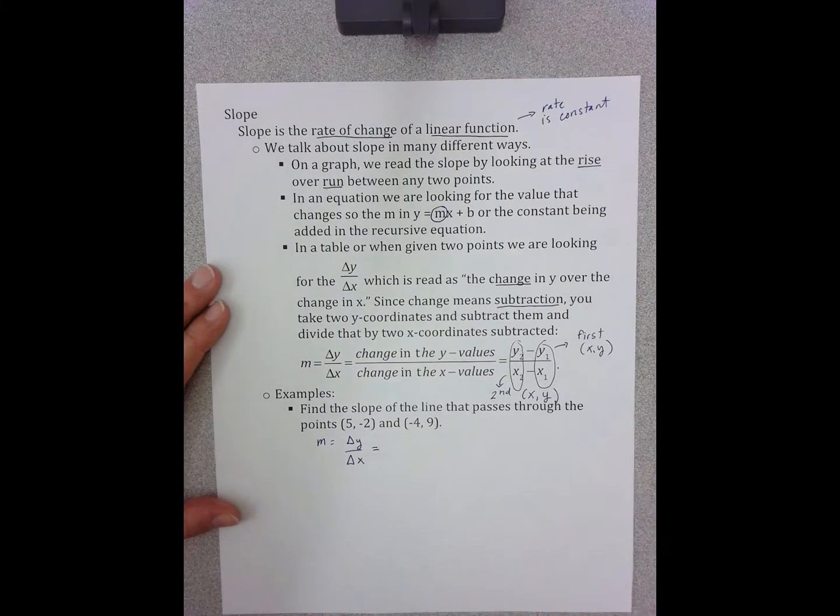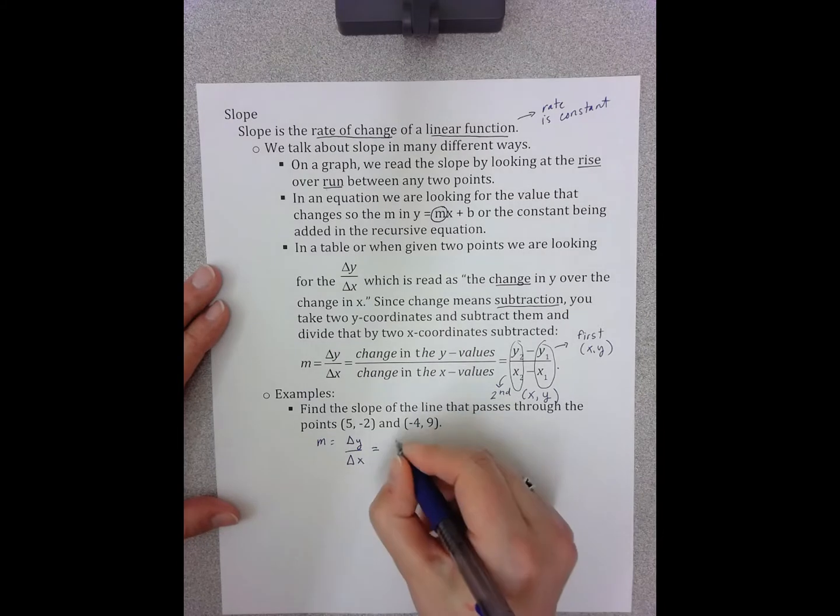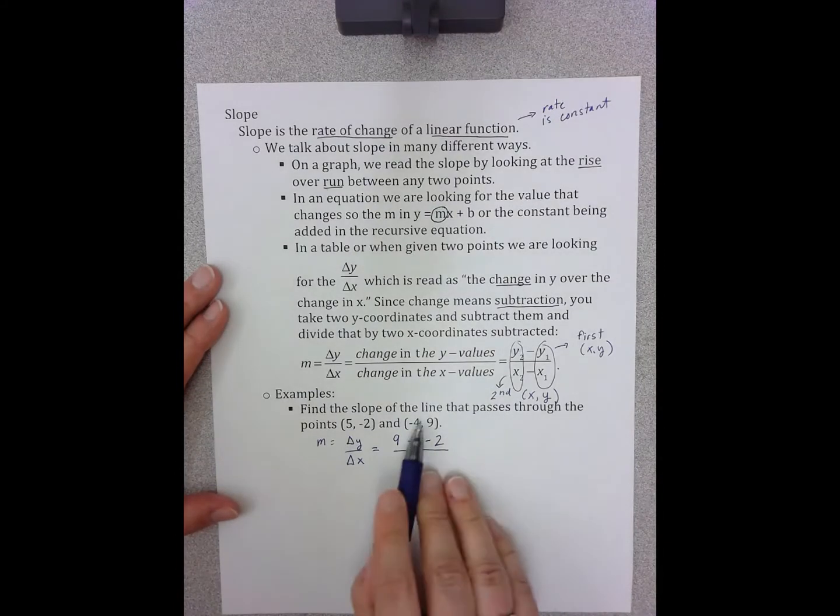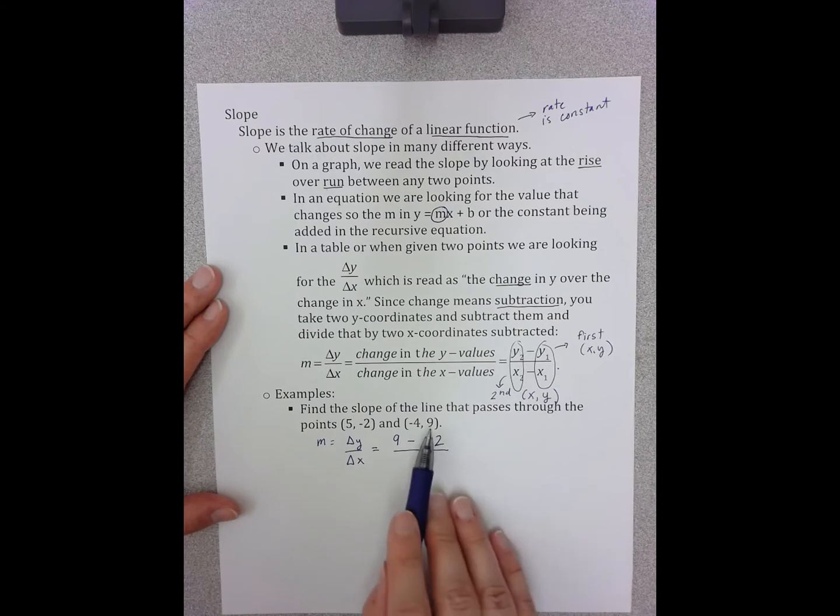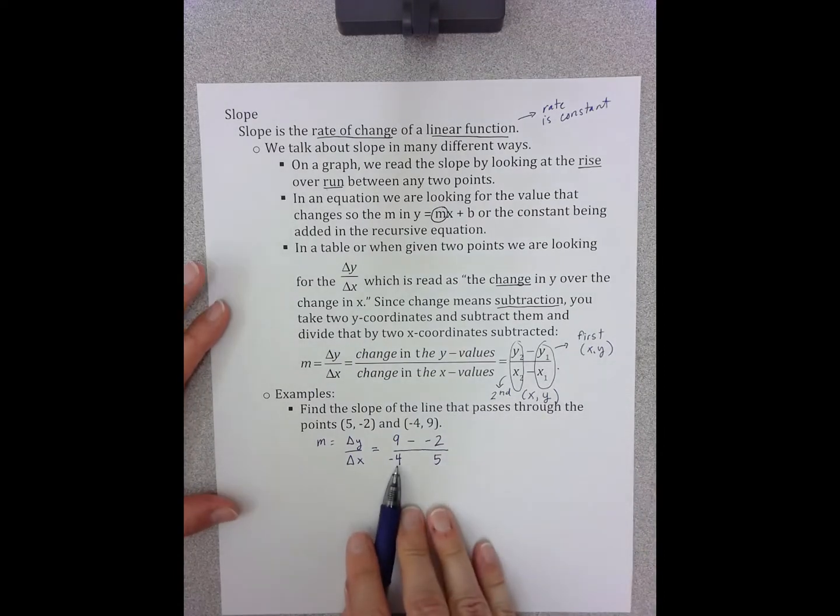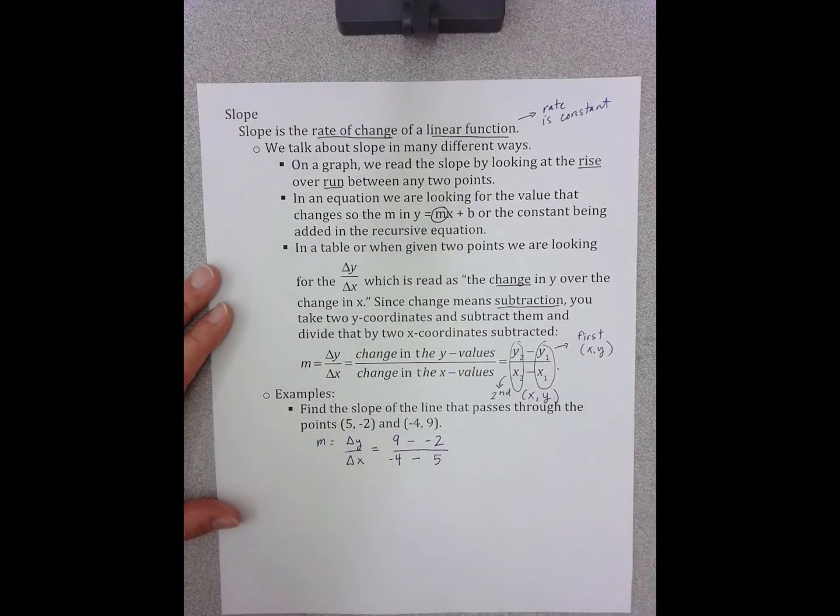Because what that allows me to do is it allows me to talk about my y values, so 9 and negative 2, and the change in them. And then it allows me to talk about my x values, and being sure that because I picked 9 as my first y value, I picked negative 4 as my first x value. So my x values and then the change in those.